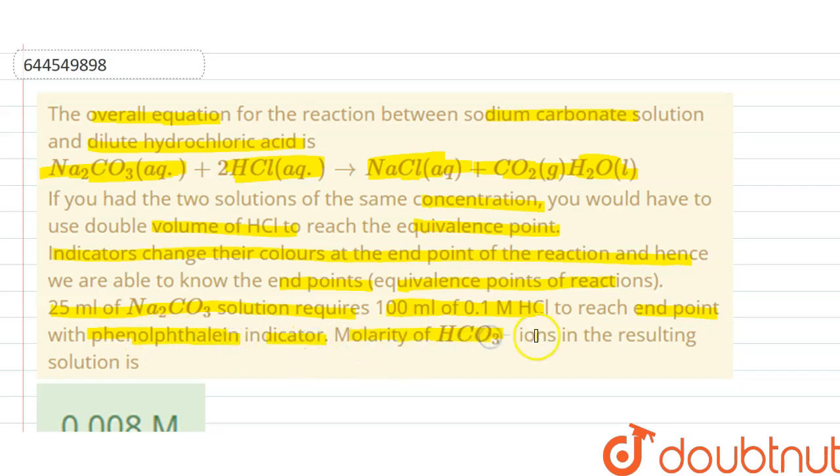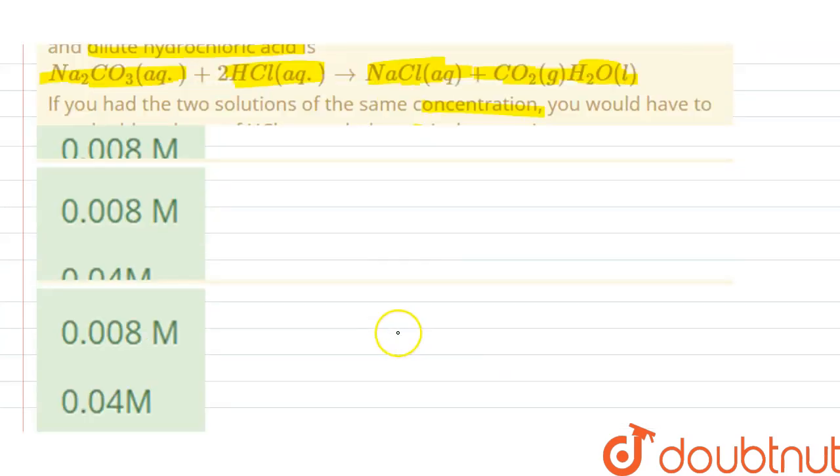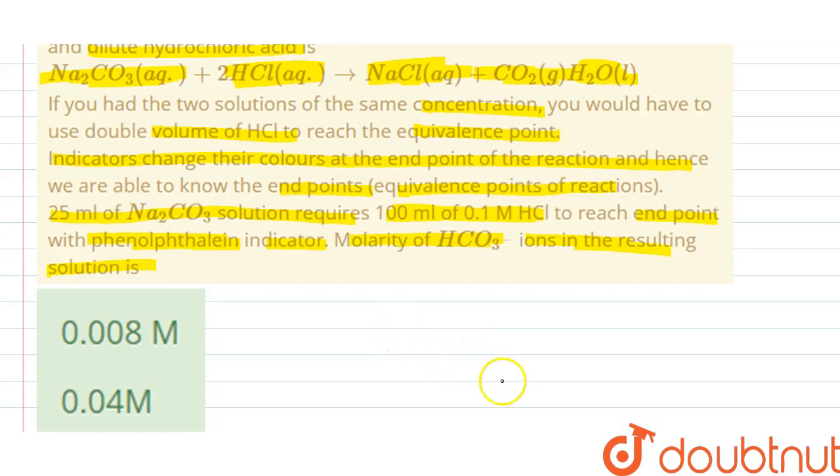Molarity of HCO3 minus ions in the resulting solution. So we can see that the question is on the overall equation for the reaction between sodium carbonate and dilute hydrochloric acid. So here the question is molarity of HCO3 minus ions in resulting solution in the presence of phenolphthalein indicator.